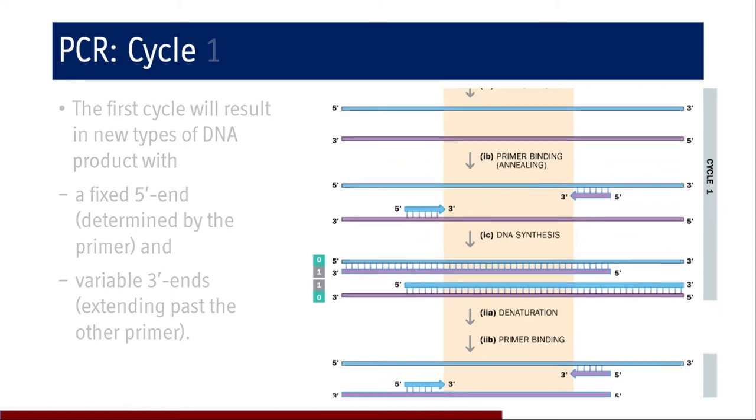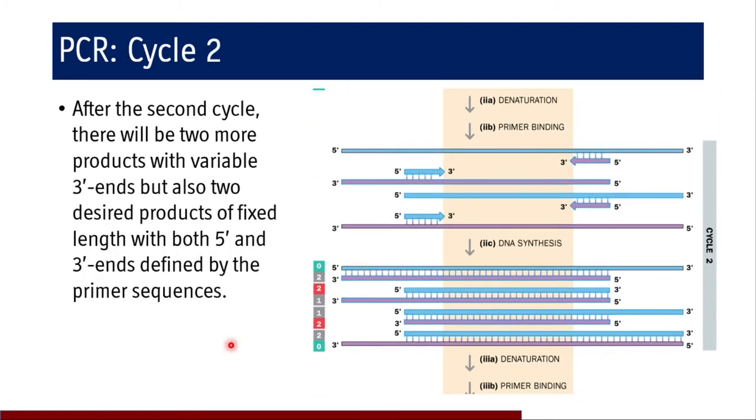After cycle one, coming to cycle two, there will be two more products with variable 3' end, but also two desired products of fixed length with both 5' and 3' ends defined by the primer sequences.